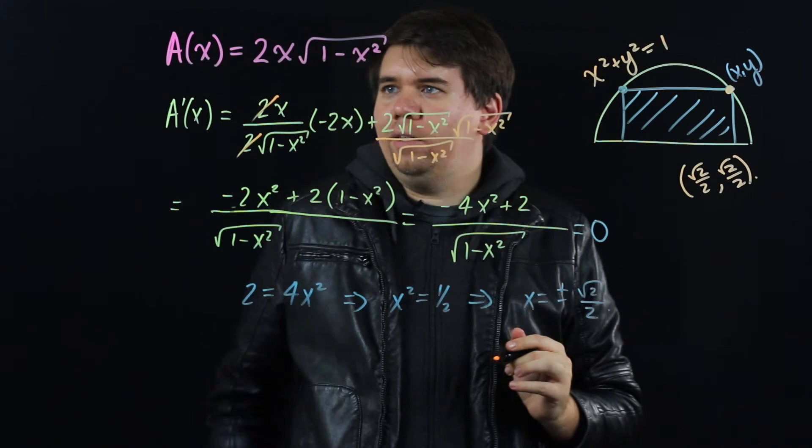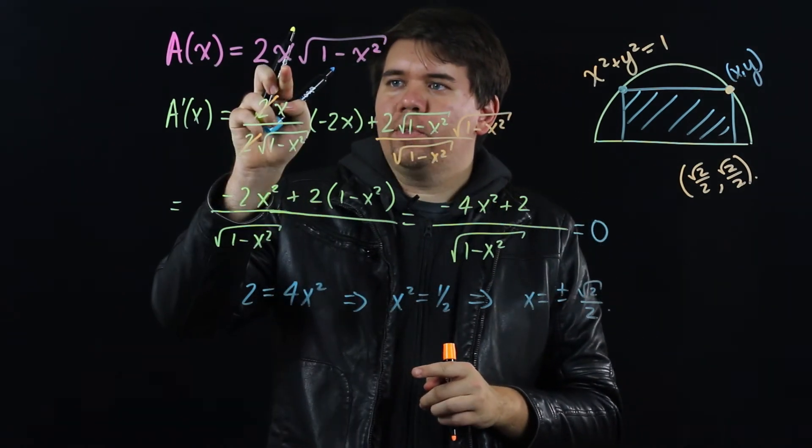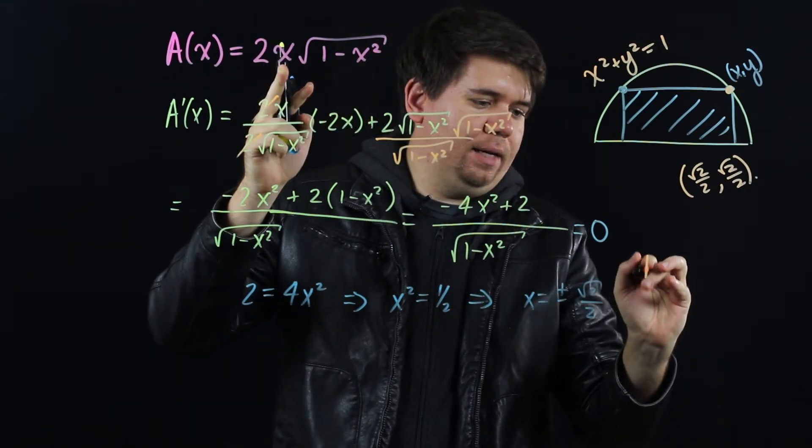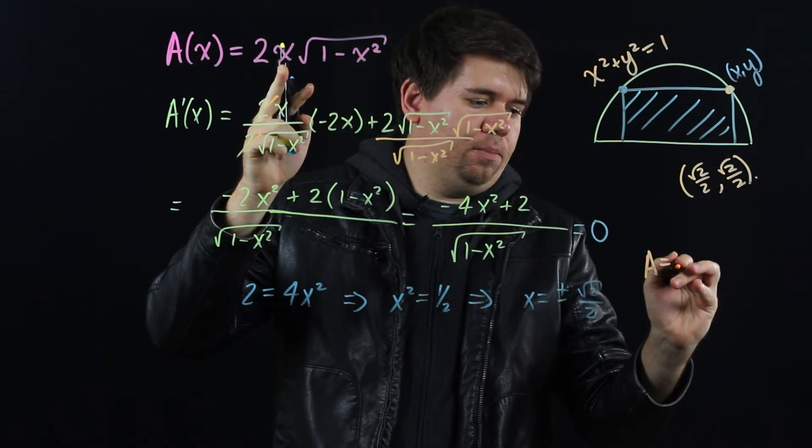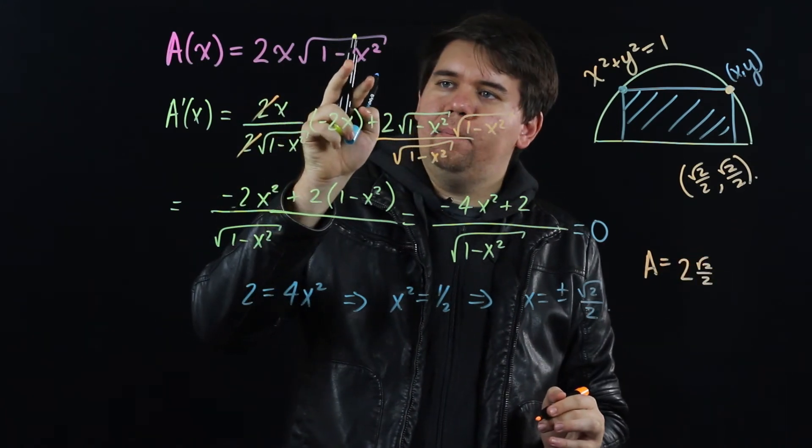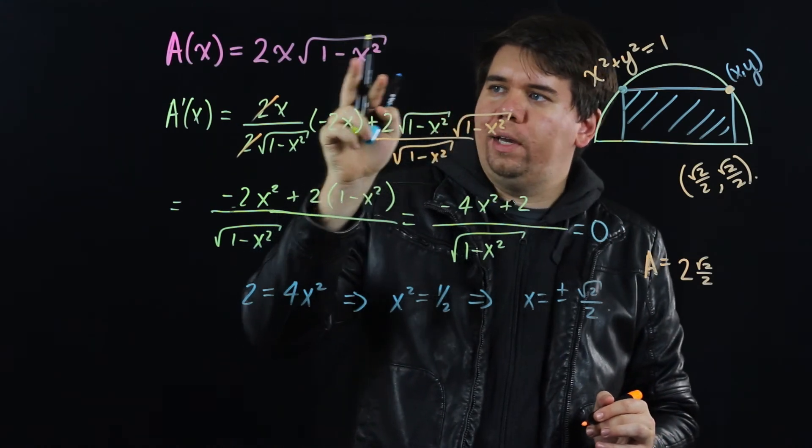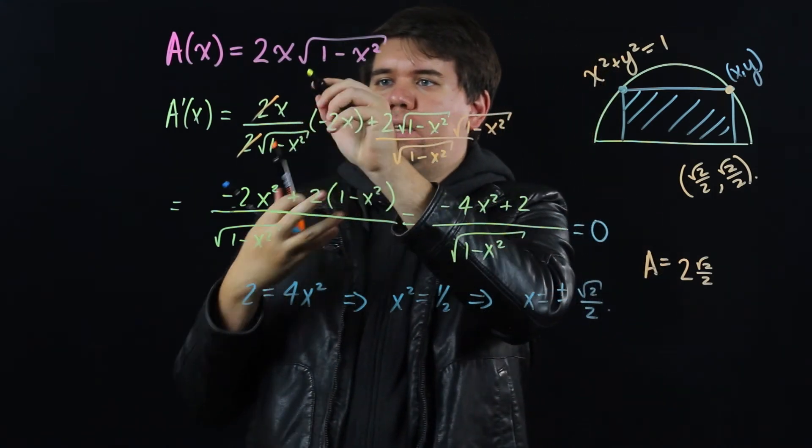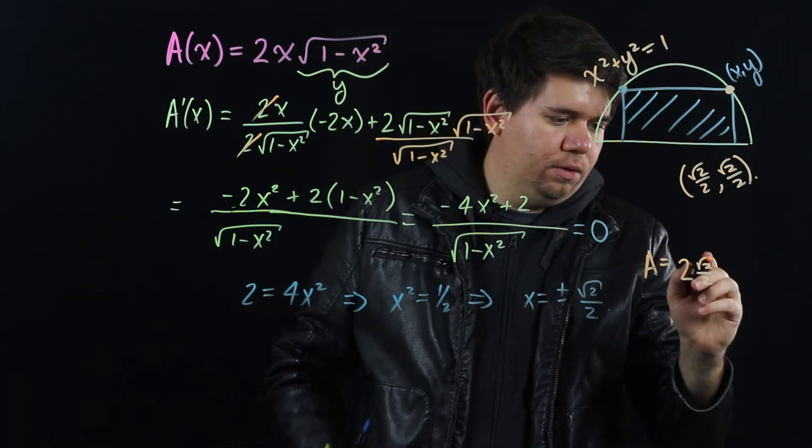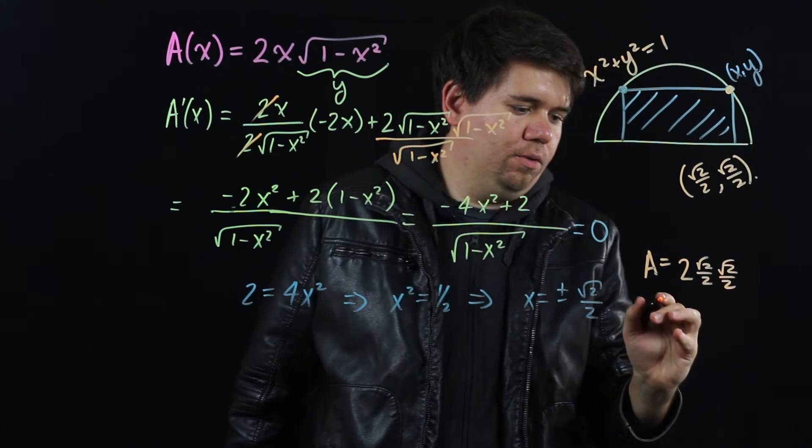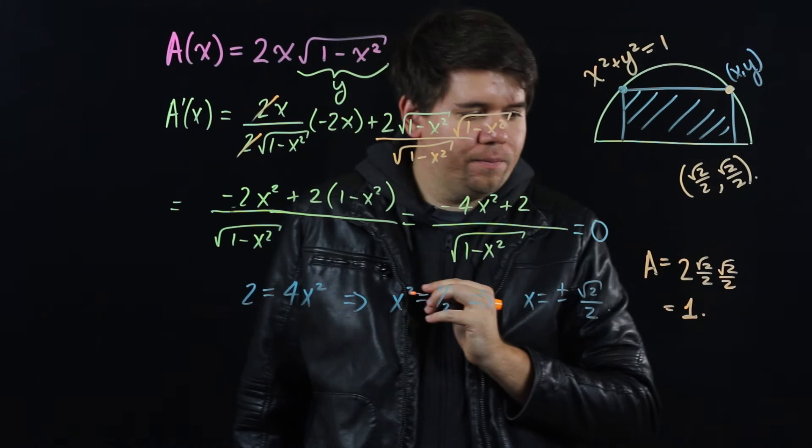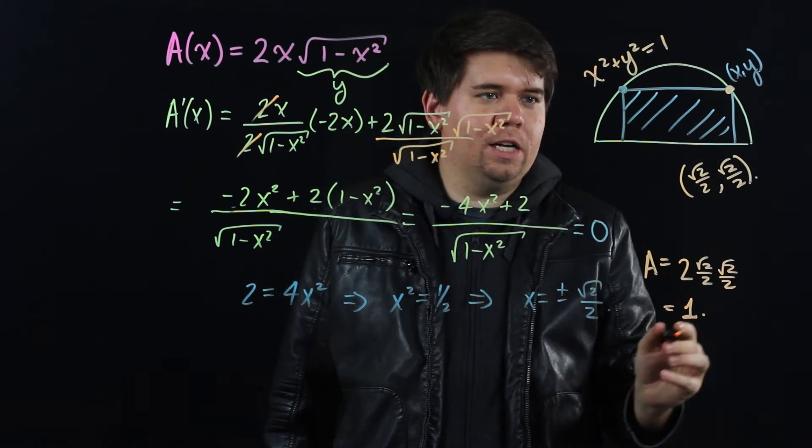What is the maximum area? The maximum area is when you plug that in, and you end up getting just 2 times your x. So my maximum area comes out to be 2 times √2/2 times √(1 - (√2/2)²). That's just your y, so that also just comes out to be √2/2 times √2/2, and you end up with area of 1. So the largest possible area is 1.